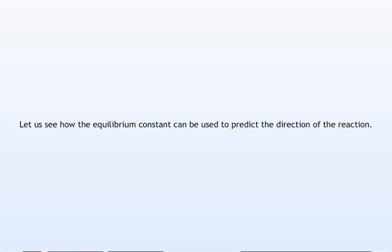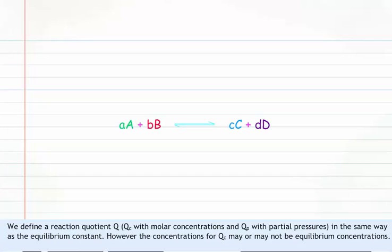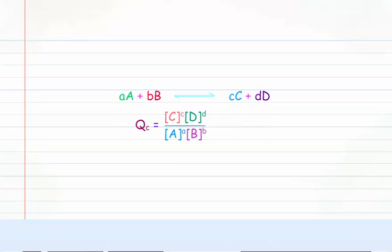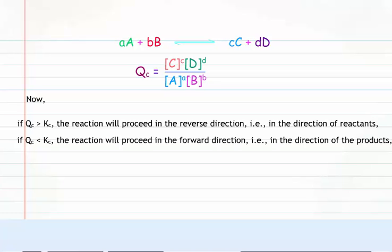Let us see how the equilibrium constant can be used to predict the direction of the reaction. Consider a general reaction: aA plus bB reversibly giving cC plus dD. We define a reaction quotient Q — QC with molar concentrations and QP with partial pressures — in the same way as the equilibrium constant. However, the concentrations for QC may or may not be equilibrium concentrations. QC equals concentration of C raised to c, into concentration of D raised to d, divided by concentration of A raised to a, into concentration of B raised to b. If QC is greater than KC, the reaction will proceed in the reverse direction — that is, in the direction of reactants. If QC is less than KC, the reaction will proceed in the forward direction — that is, in the direction of products. If QC equals KC, the reaction mixture is already at equilibrium.